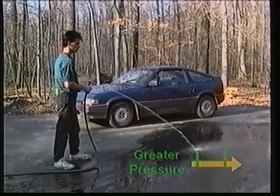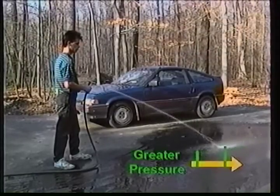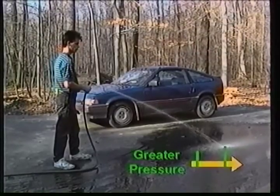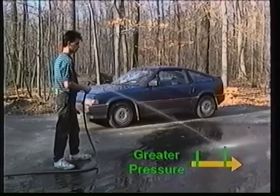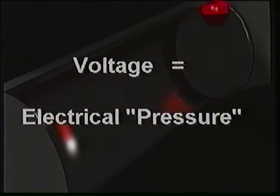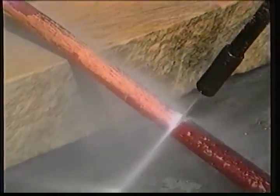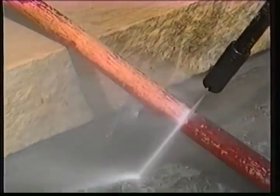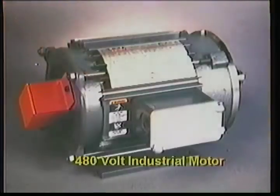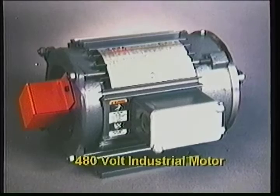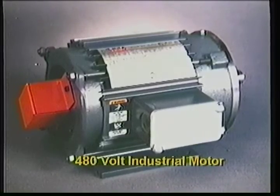We know that water will squirt farther as water pressure increases. Electrical voltage is similar to water pressure. A high-pressure water sprayer can remove paint, and similarly, higher voltages are needed to operate larger machines.